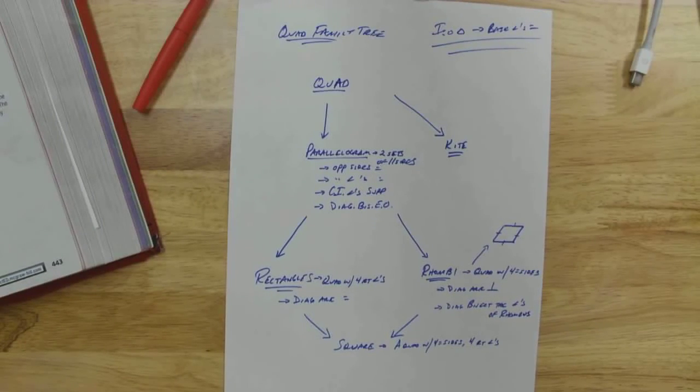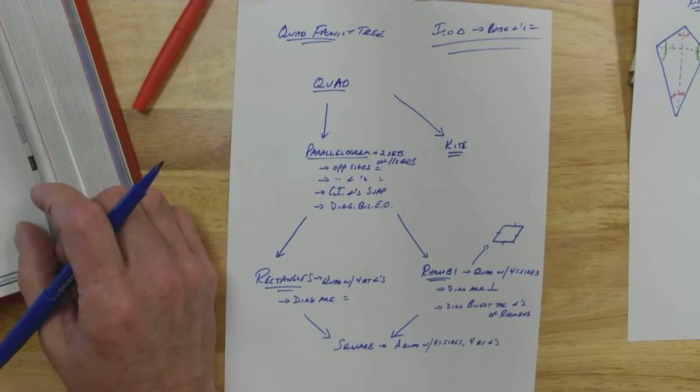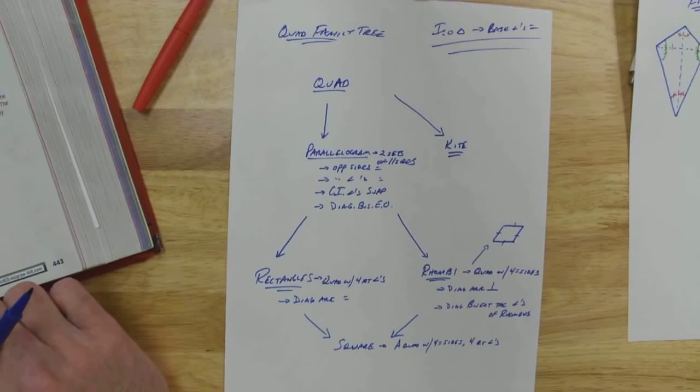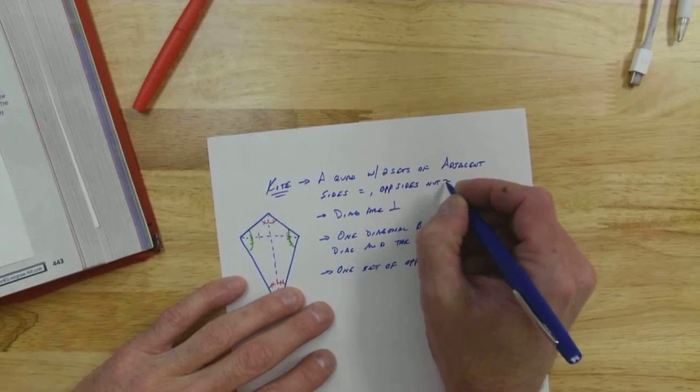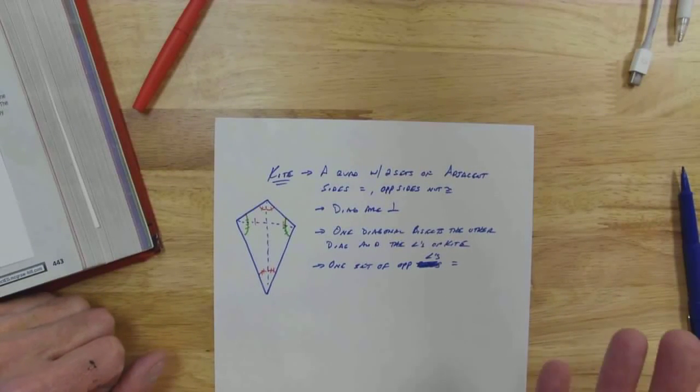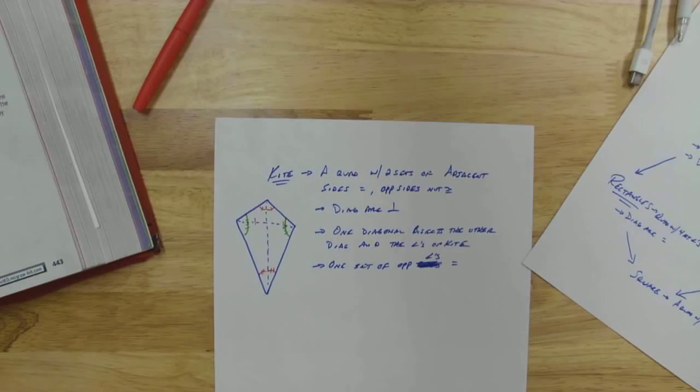Could a kite be a rhombus? Let's take a look. I want to read the way they've defined it. A kite is a quadrilateral with exactly two sets of congruent consecutive sides. Unlike a parallelogram, the opposite sides are not congruent and not parallel. Let's add one more thing - opposite sides are not congruent, so that makes it so it can't be a rhombus. No rhombus for you.